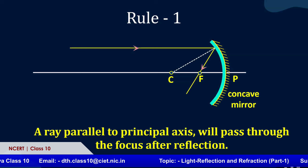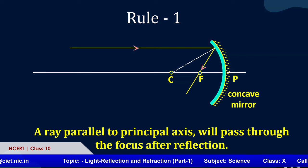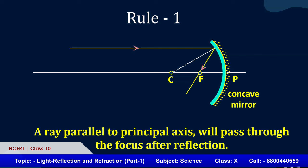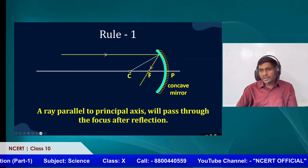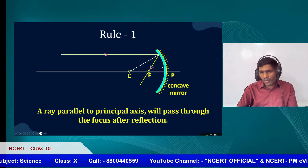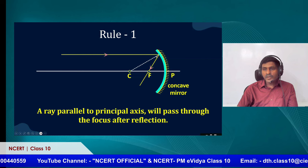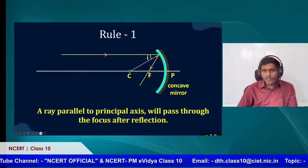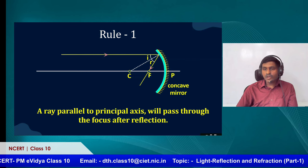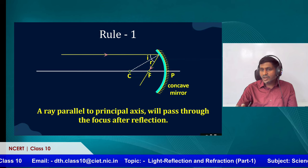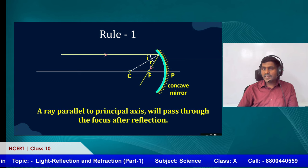Before going to the second rule, recall that the law of reflection obeys not only at a plane surface but also at a curved surface. Here, the center of curvature is used to draw the normal — a line between the center of curvature and the reflecting surface is the normal. The angle between the normal and the incident ray is the angle of incidence; the angle between the reflected ray and the normal is the angle of reflection. Both must be equal — wherever reflection occurs, it obeys this law.